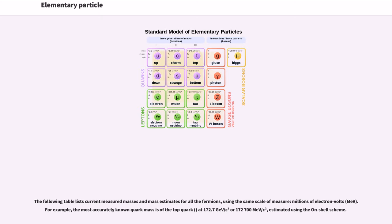The following table lists current measured masses and mass estimates for all the fermions, using the same scale of measure: millions of electron volts (MeV). For example, the most accurately known quark mass is the top quark at 172.7 GeV/c² or 172,700 MeV/c², estimated using the on-shell scheme.